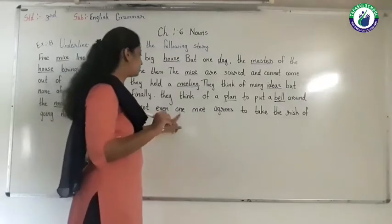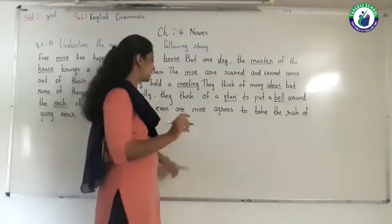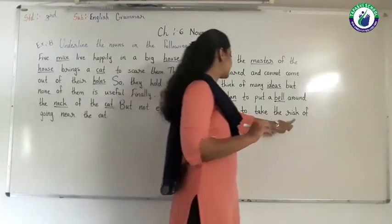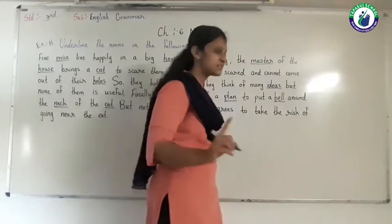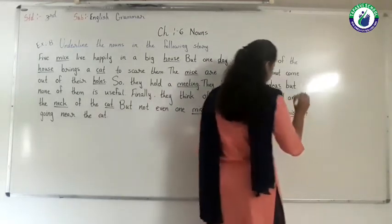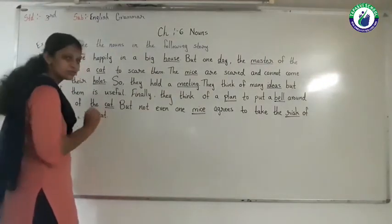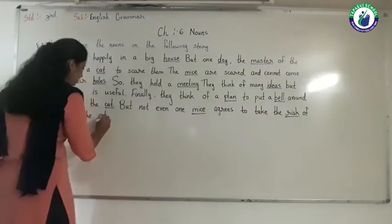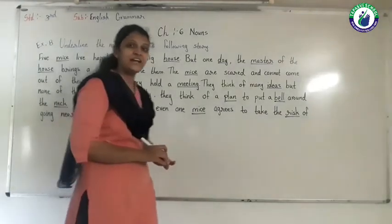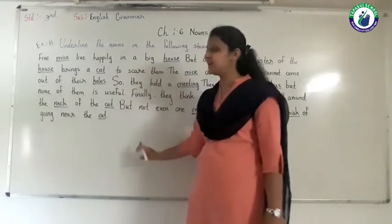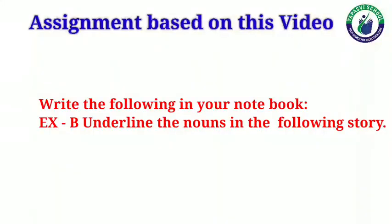But not even one mouse — we underline the word mice again. Agrees to take the risk — the word risk is called a noun. Of going near the cat — again we underline the word cat because it is an animal and it is called a noun. So exercise B is completed.